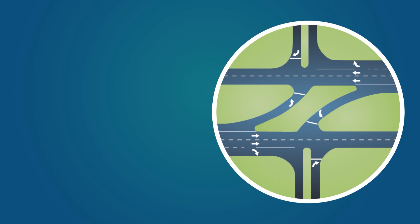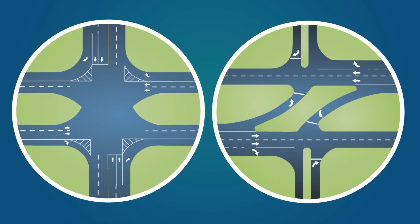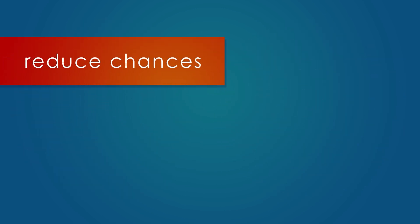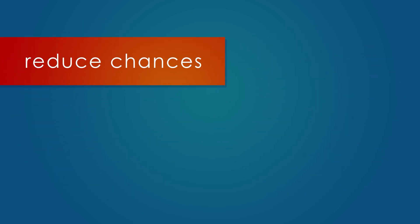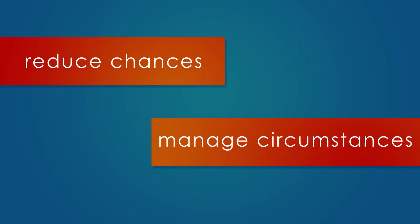Some of these safer intersections look very different. Others may look familiar, but require a different way to make left turns. The goal is to either reduce the chances for serious crashes or manage the circumstances around crashes to make them less severe.